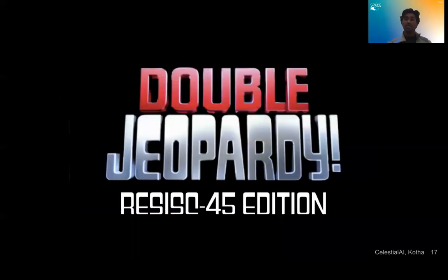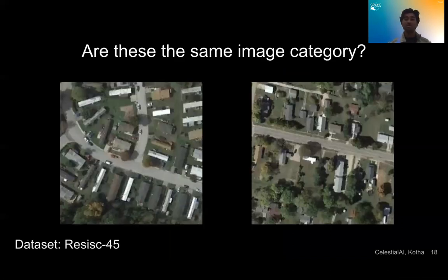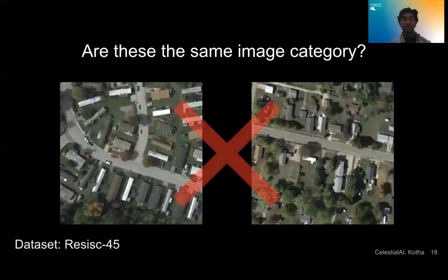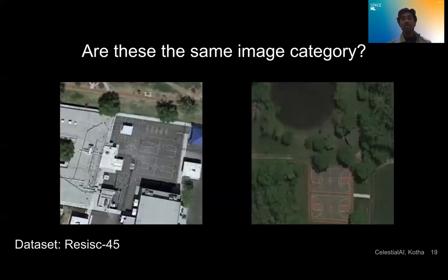So, let's just play around a little bit with our data set, ResX45, in a fun style game where I'll show you two images and you have to tell me if they are the same class or a different class. Do these two images belong to the same class? We actually see that no, these two are separate classes. The left is a mobile home park, while the right is a medium residential neighborhood.